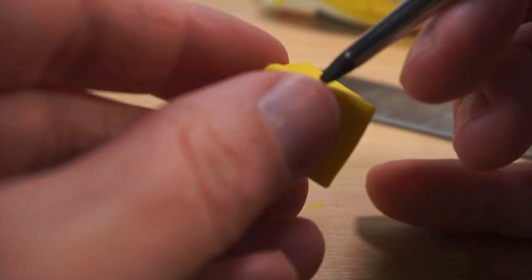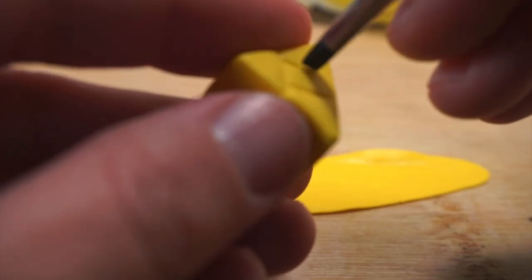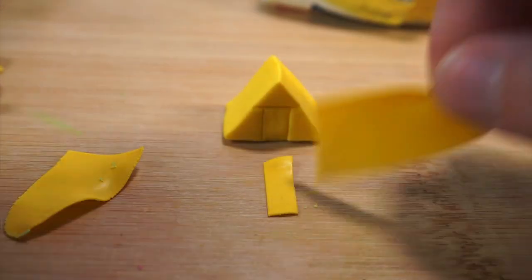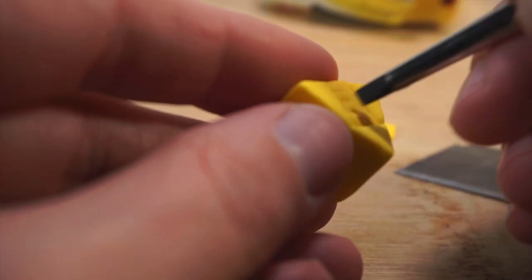I'm adding the door for the tent and then taking some slightly darker yellow clay, and that will be the little opening flap.